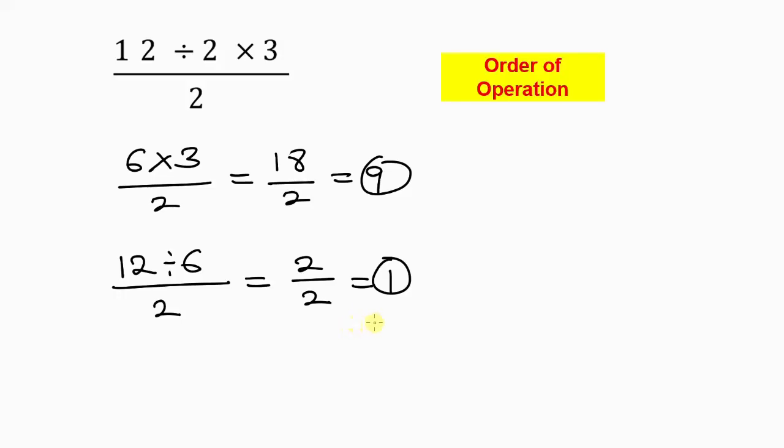In mathematics, we go with what we call the order of operation. And what helps us in most cases to solve questions like this is this phrase known as BEDMAS. Where B is brackets, E is exponents, D is division, M is multiplication, A is addition, and S is subtraction.